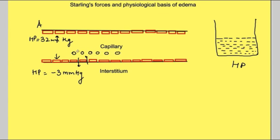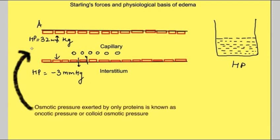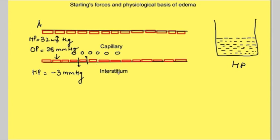Proteins are mostly present inside the capillary and exert an osmotic pressure of 28 mmHg. However, this impermeability to proteins is not absolute, and some proteins leak out into the interstitial space, where they exert an osmotic pressure of 8 mmHg.